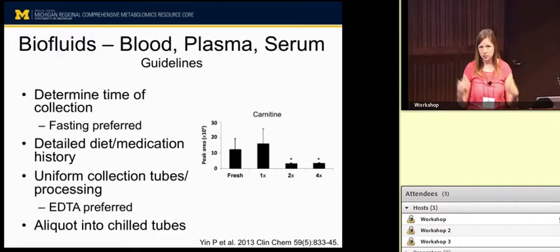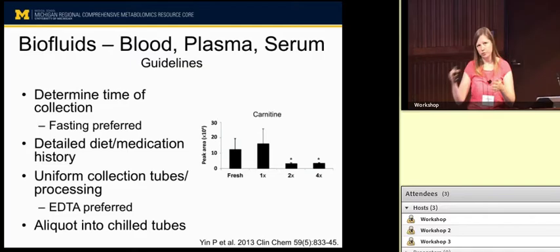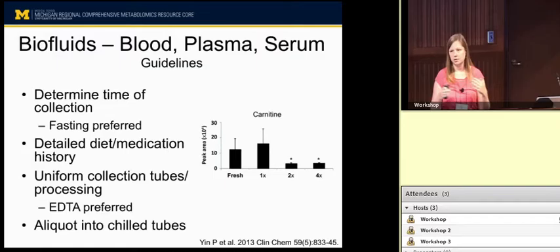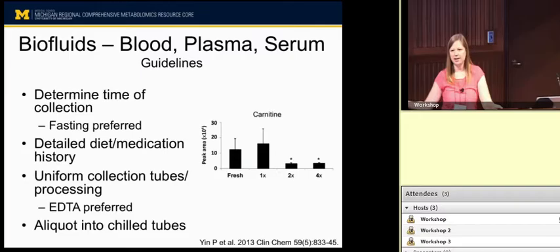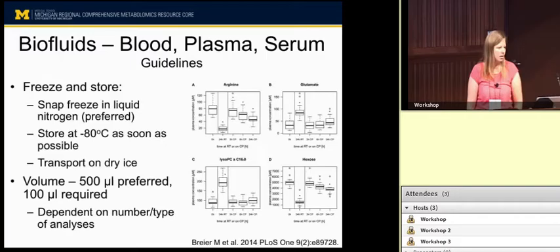Have uniform collection tubes — this goes back to consistency. We prefer EDTA tubes. Once you take your sample, it's best to go ahead and aliquot it before you freeze it the first time. For specific metabolites, freeze-thaw effects can change the concentration of the metabolite present and may impact your results. So it's best to aliquot it out so that if you want to analyze a sample, you're not taking that same one out and freeze-thawing it multiple times — you can just take what you need when you need it.